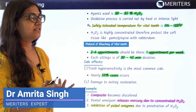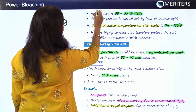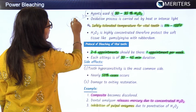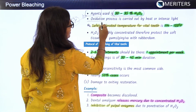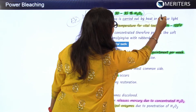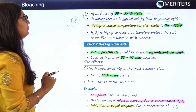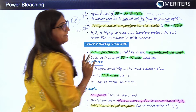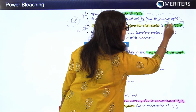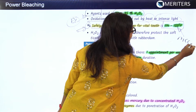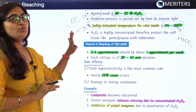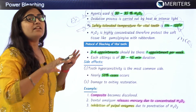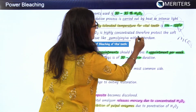We have seen the contents of the Mac-Ene solution. The bleaching agent in Mac-Ene solution is 30 to 35% H2O2. This agent uses an oxidation process carried out by heat or intense light to lighten the discolored tooth or bleach the tooth. The safely tolerated temperature for any vital teeth — an important MCQ point — is 114 to 150 degrees Fahrenheit. Since H2O2 used here is 30 to 35%, it is highly concentrated, so you need to protect surrounding soft tissues like gums and gingiva using a rubber dam system.